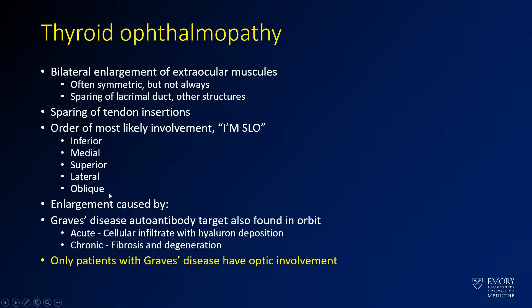The cause of the enlargement in this case is that the autoantibody causes infiltration of the muscles of the orbit. For this reason, only patients with Graves' disease will have optic involvement. If you just take exogenous thyroid, for instance, you won't get enlargement of your extraocular muscles.